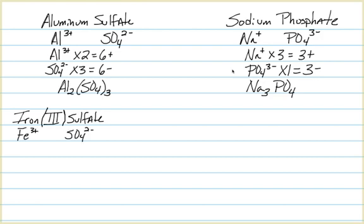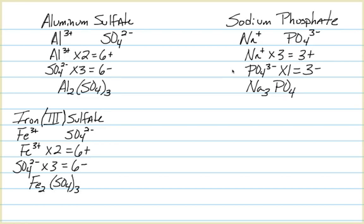Iron(III) sulfate: iron has a plus-three oxidation state — notice this is the variable oxidation state format we saw previously. Sulfate has a negative-two oxidation state. We have a common multiple of six, and our formula is Fe₂(SO₄)₃. The sulfate is put in parentheses with the subscript three because we need three of them.